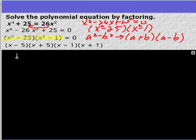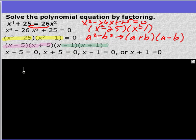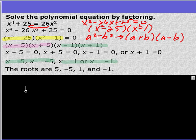So x squared minus 25 factors into x minus 5, x plus 5, and x squared minus 1 factors into x minus 1, x plus 1. Now we're going to set those all to 0 and solve. That gives us four different roots, positive 5, negative 5, positive 1, negative 1. And that would be the answer.